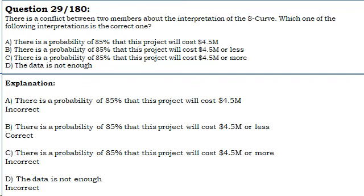Option B: There is a probability of 85% that this project will cost $4.5 million or less. Correct.